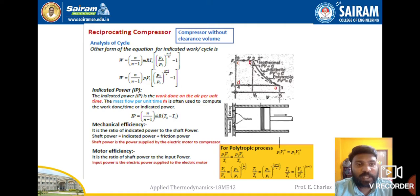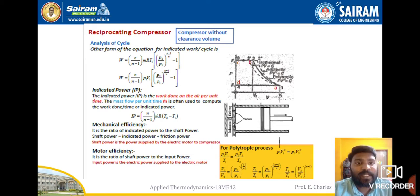Next, we will see some terminologies used in reciprocating compressors. The first one is Indicated Power, also called IP. Indicated power is the work done on the air per unit time. The mass flow rate is used to compute the work done per unit time. The formula for indicated power is: IP = n/(n-1) × mR × (T₂ − T₁).